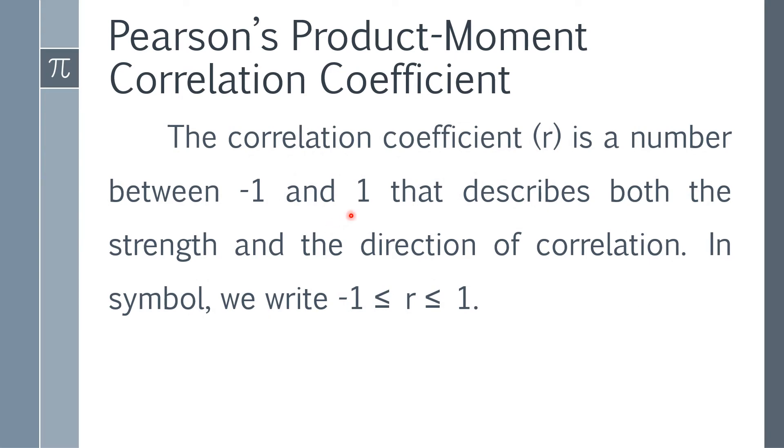The correlation coefficient is a number that can only fall between negative 1 and 1 that describes both the strength and the direction of correlation. In symbol, we write r is greater than or equal to negative 1 but less than or equal to 1.